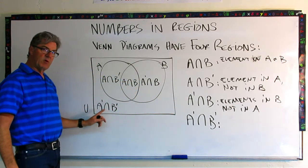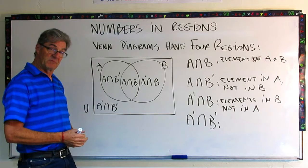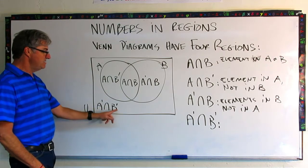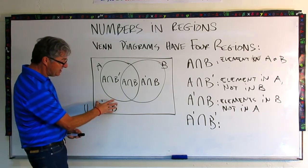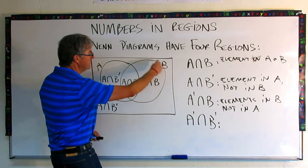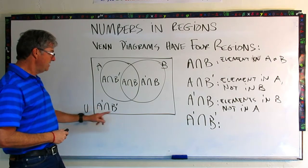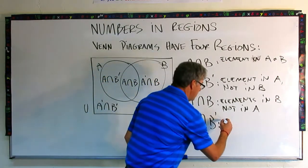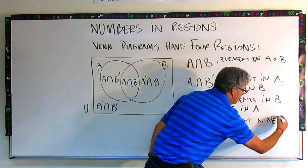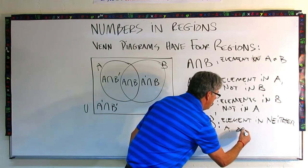This last one might be a little bit more confusing. See if you can figure out how to write what that would be. This is the intersection of everything that's not in A and not in B. That makes sense because this is outside of the circles. In this universal set, all of this area outside the two circles isn't in A and isn't in B. So it's the intersection of not A and not B — the elements in neither A nor B.